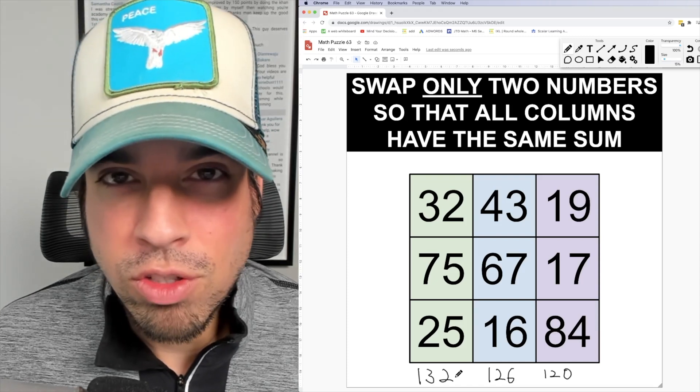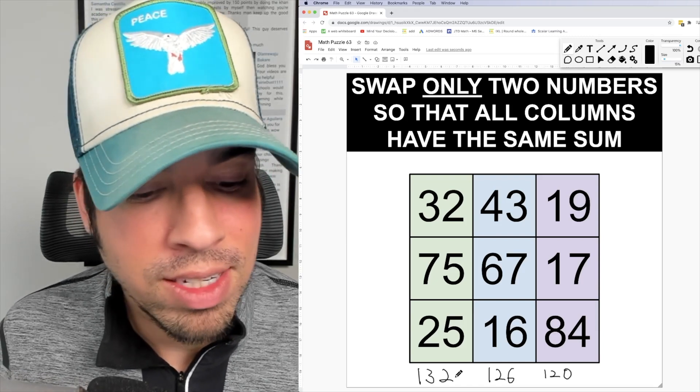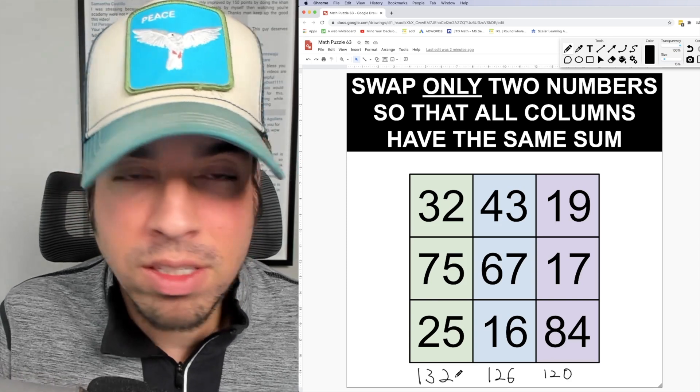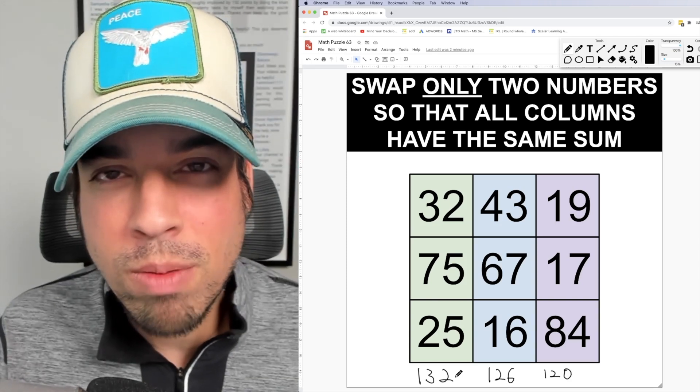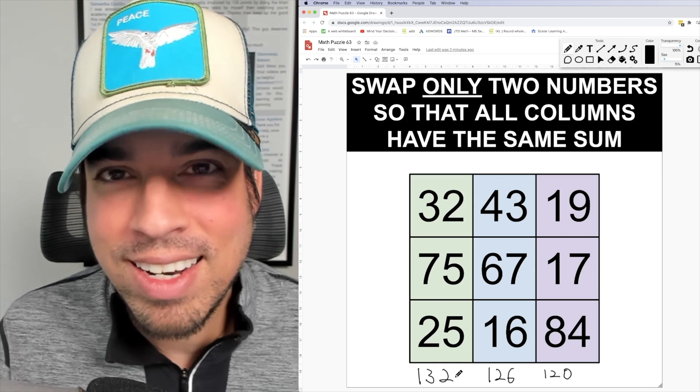Now that I know the sums I can start to figure out which two numbers I should swap. Now I see I've got a 120, a 126, and a 132. I can only exchange two numbers which means one of the columns cannot change.